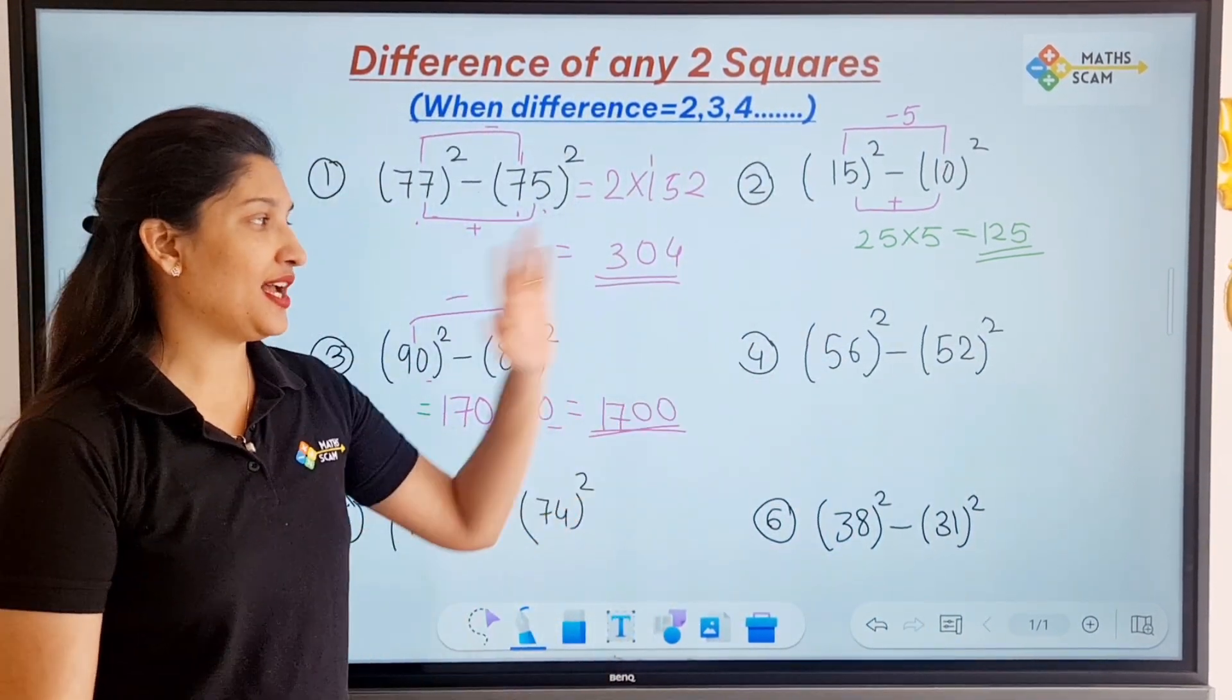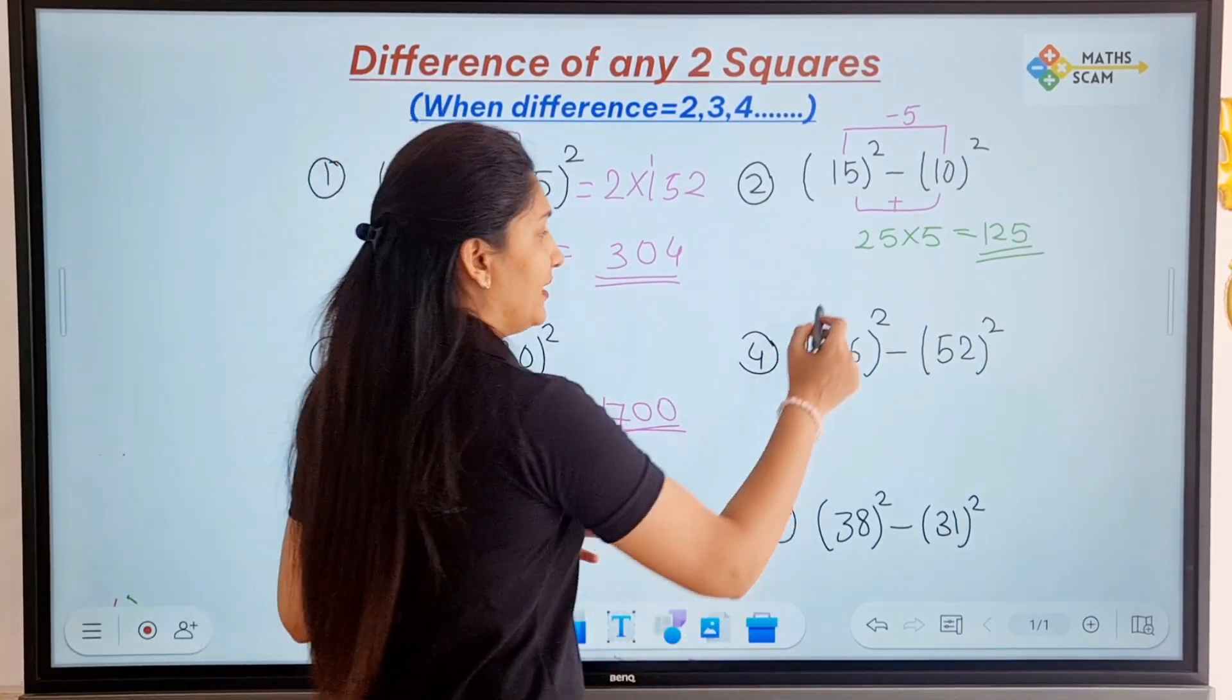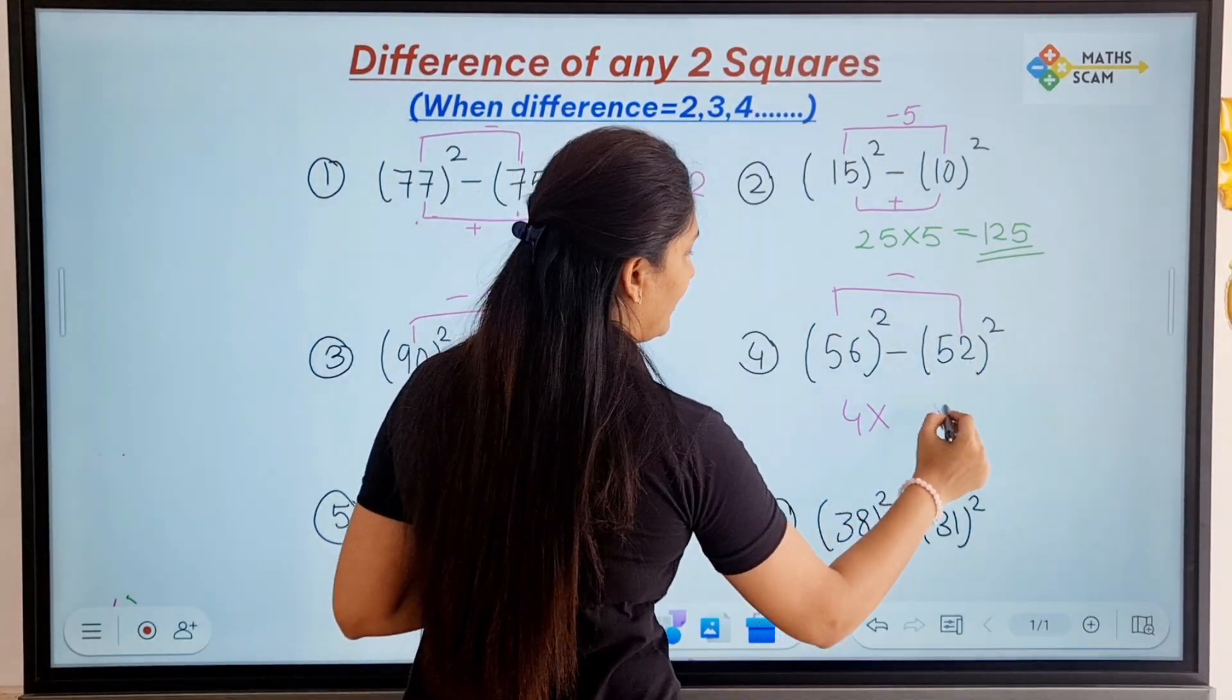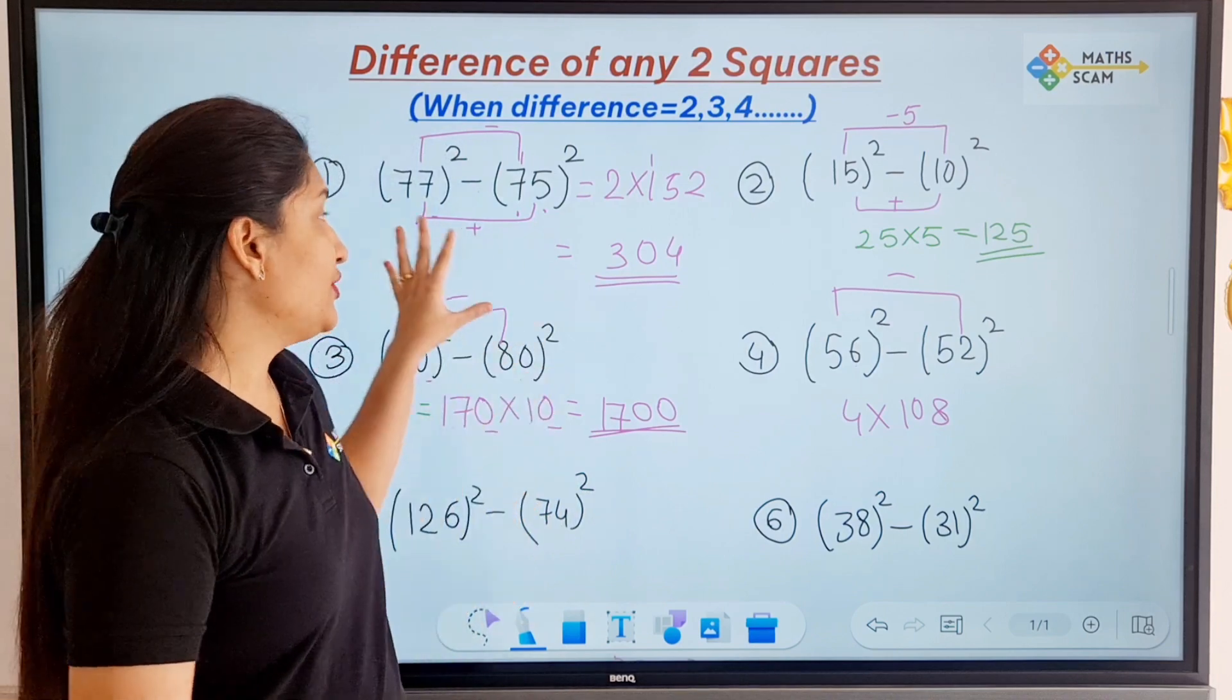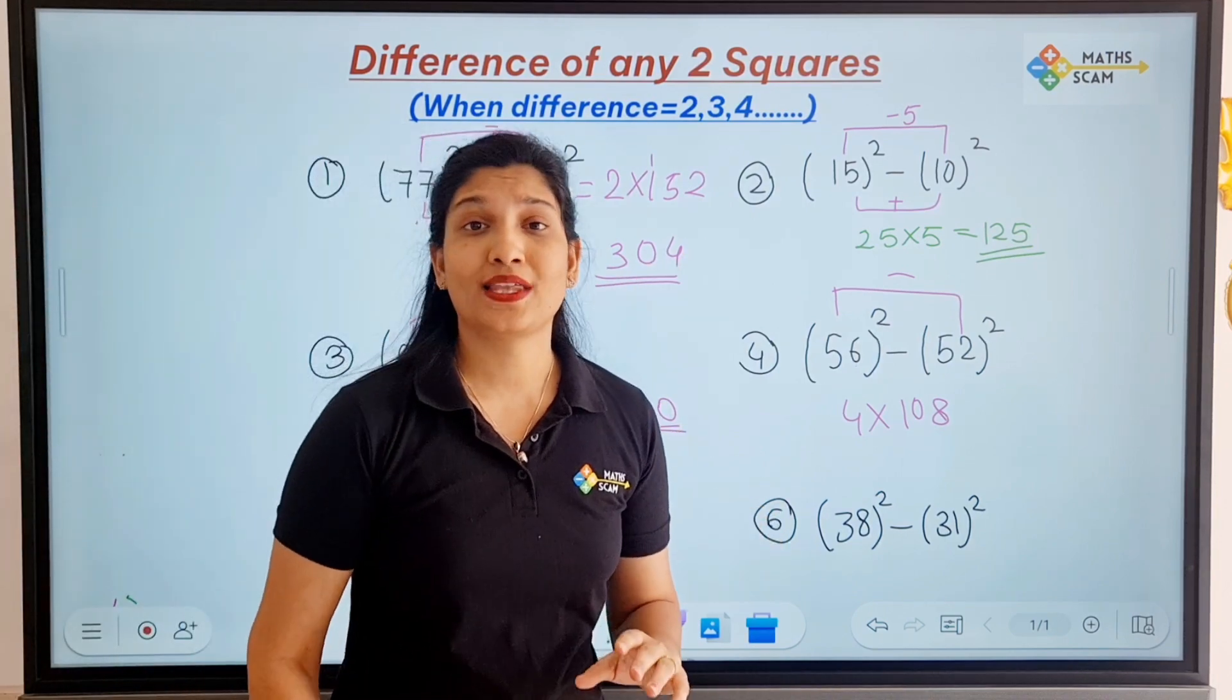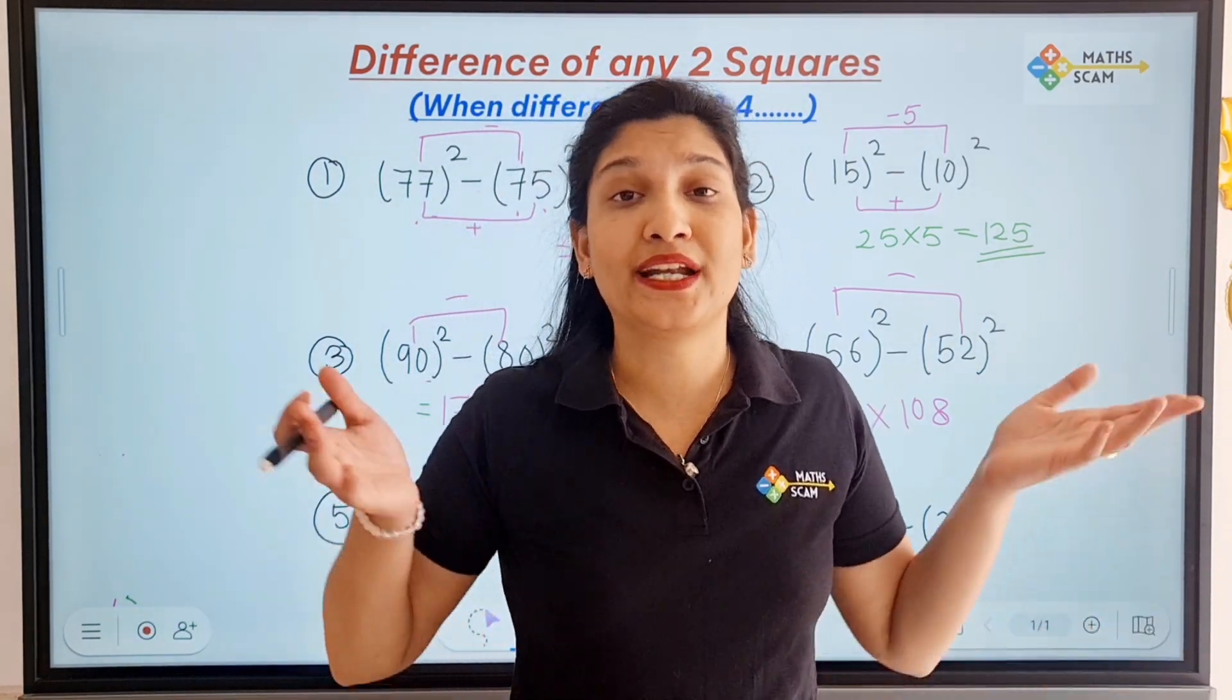Next one, 56 square minus 52 square, difference is 4. Addition is 6 plus 2 is 8, 5 plus 5 is 10. Some people are saying sometimes you are doing addition first and sometimes subtraction first. So that doesn't matter, it's multiplication. Multiplication is commutative, you know that right? So if you swap the number, still you are getting the same answer.